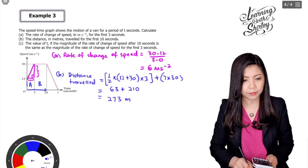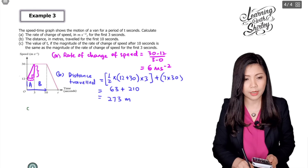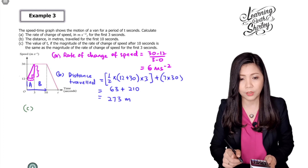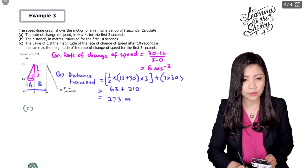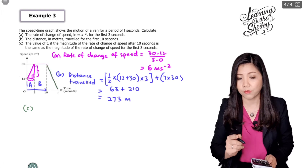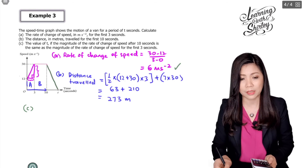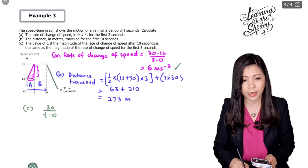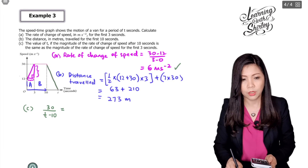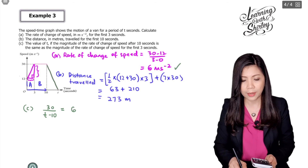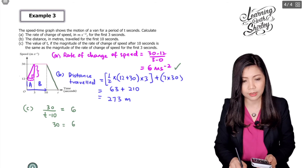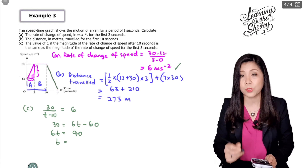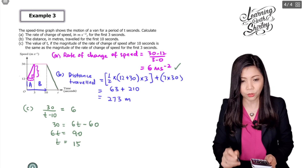For part C, find the value of T if the magnitude of the rate of change of speed after 10 seconds equals the magnitude for the first 3 seconds, which is 6 m/s². So 30 over (T minus 10) equals 6. This gives 30 equals 6T minus 60, so 6T equals 90, and therefore T equals 90 divided by 6, which is 15.